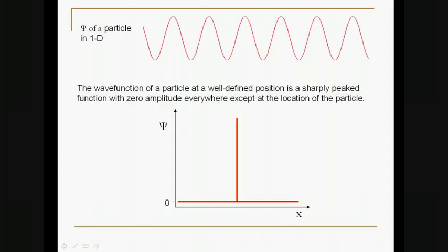the wave function looks like the sinusoidal function that I have here. Now suppose that I'd like to locate this particle in space. The wave function of a particle at a well-defined position is a sharply peaked function with zero amplitude everywhere except at the location of the particle.